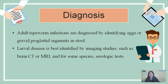Now diagnosis. Adult tapeworm infections are diagnosed by identifying eggs or gravid proglottid segments in stool. Larval disease is best identified by imaging studies such as brain CT or MRI, and for some species serologic tests are also required. These are the confirmatory tests for the disease.